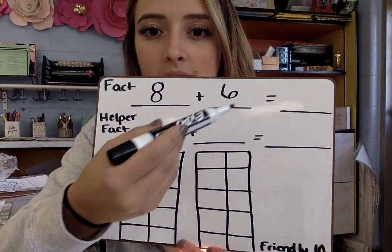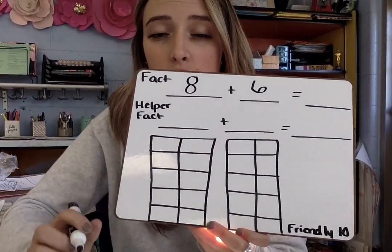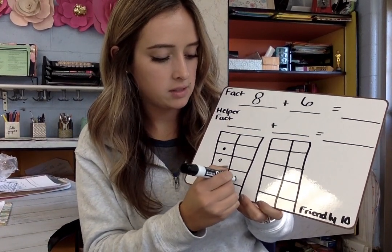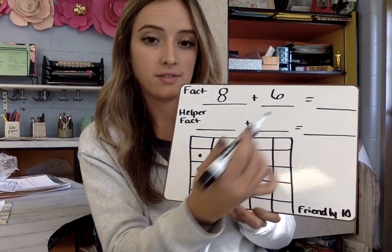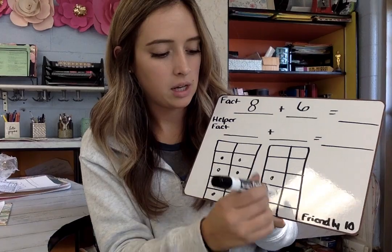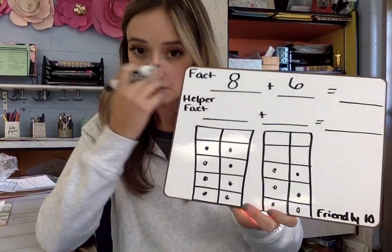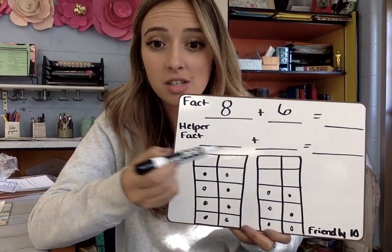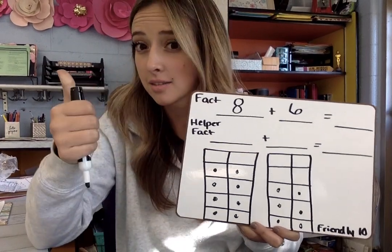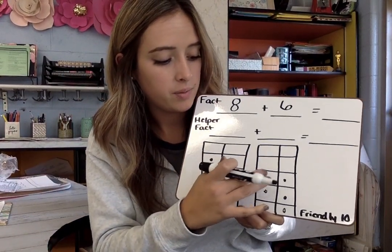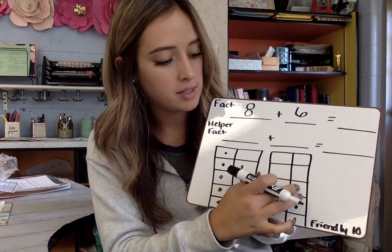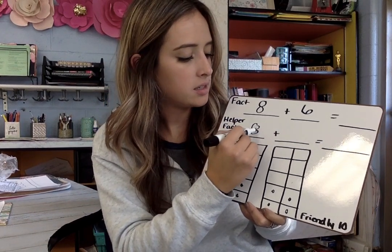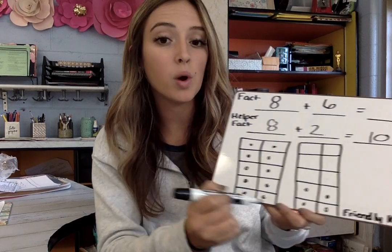So let's look at 8 plus 6. The first thing I'm going to do is draw my 10s frame. So I have 1, 2, 3, 4, 5, 6, 7, 8. And then I have 6: 1, 2, 3, 4, 5, 6. In a 10s frame, I know that to get this 8 to my friend 10, I just need to fill two more boxes. So I'm going to take 2 and move them over here. My helper fact here is 8 plus 2 equals 10, because I've filled up one whole frame.